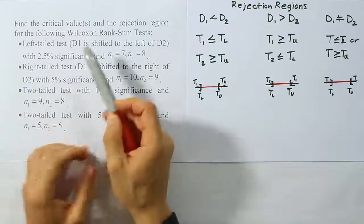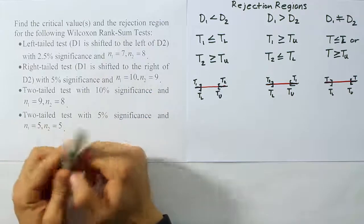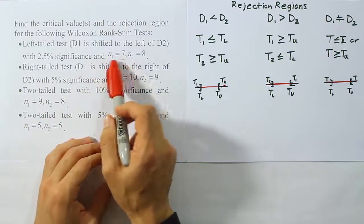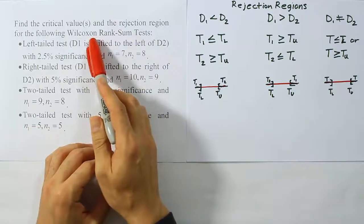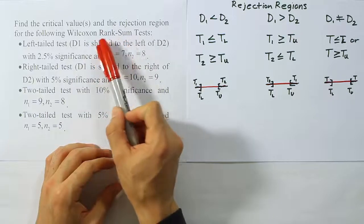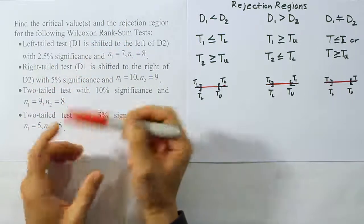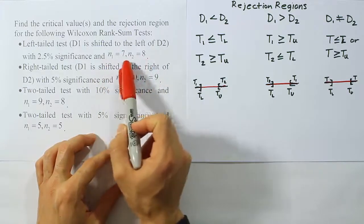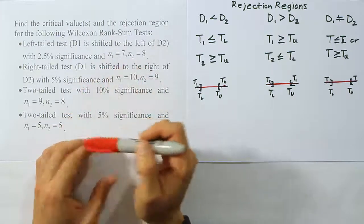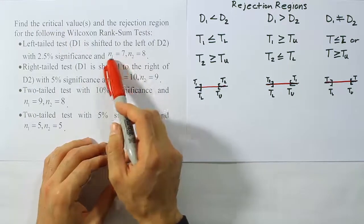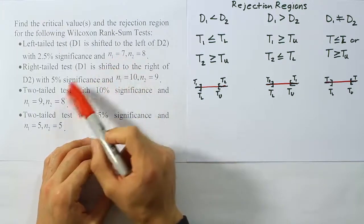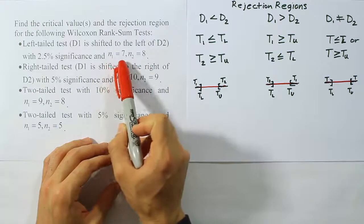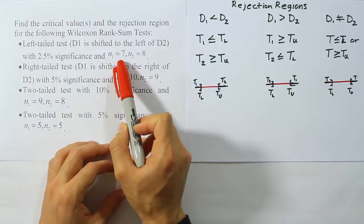Let's talk about the Wilcoxon rank sum test procedure in general. The test statistic is based on the rank total for the different populations. There are two independent populations, and you'll have the sum of the ranks for each. We use the test statistic for the population with the smallest sample size, so our test statistic will be T1 whenever N1 is less than N2. In this example, N1 is less than N2, so T1 is our test statistic.